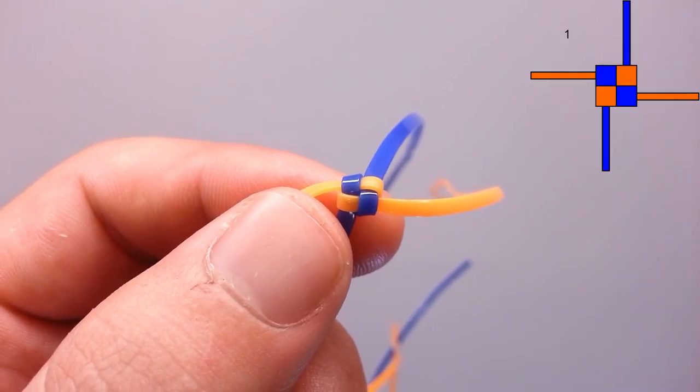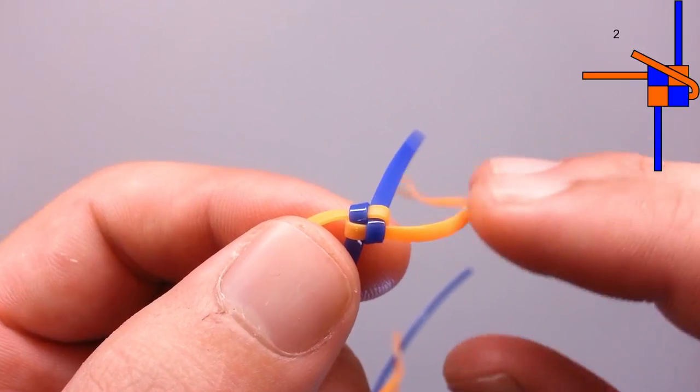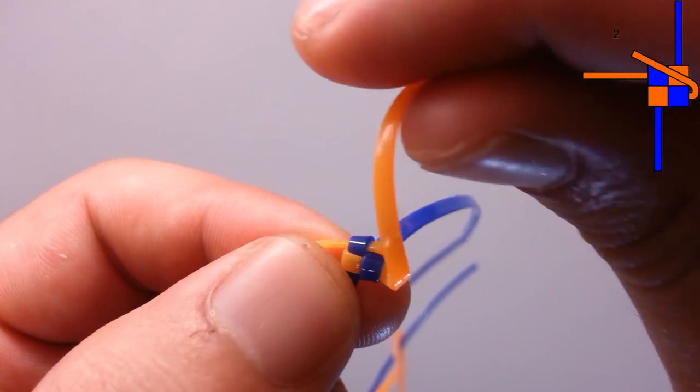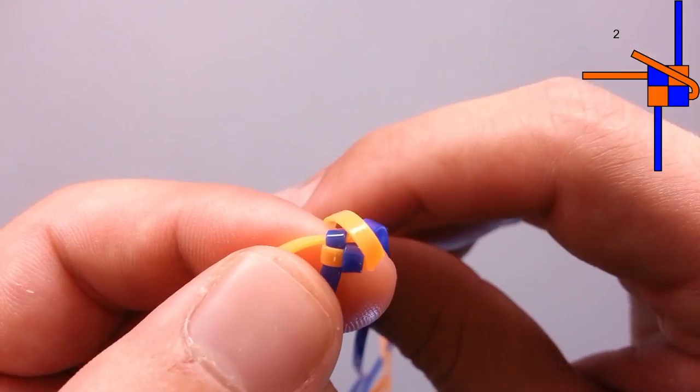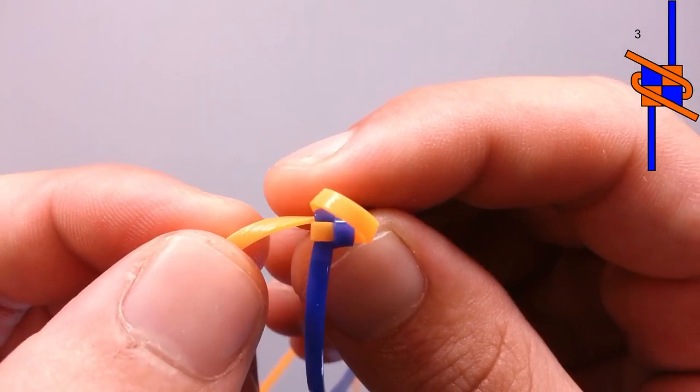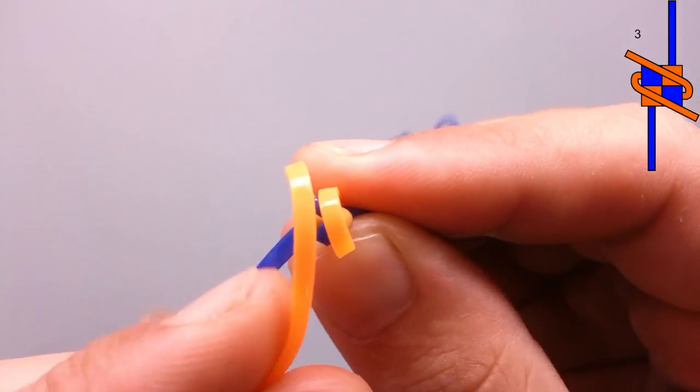The fastest way to continue it is to take one string and cross it diagonally. Then we are going to take the opposite string and cross it next to it.